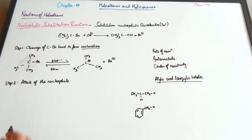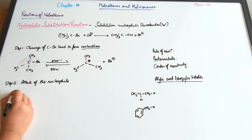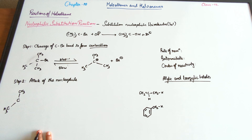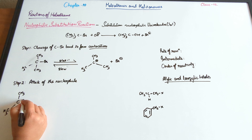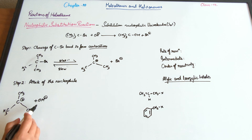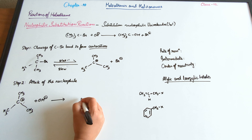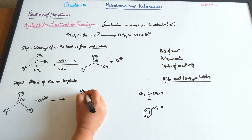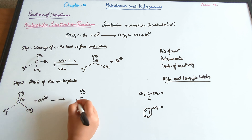So we have the carbocation that has formed. The next step is the attack of the nucleophile — our nucleophile is OH⁻. The carbocation, which is (CH₃)₃C⁺, reacts with OH⁻. The nucleophile can attack from the front, from the back, or anywhere — we will talk about the stereochemical aspect later. This leads to the formation of tertiary butyl alcohol, and this step is the fast step.